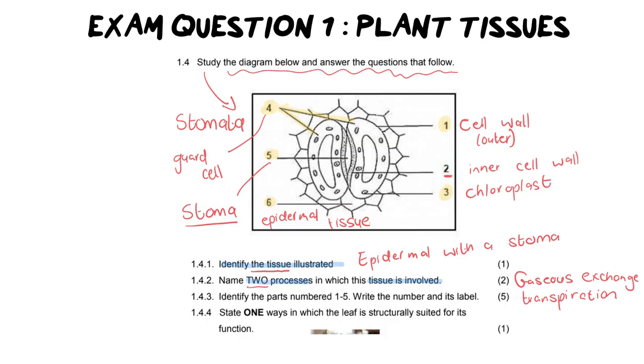On to our next question, number three, identify parts numbered one to five. Write the number and its label. Congrats, we have done that. We didn't need to do it for number six, but that's okay because it helped us identify that this is all part of the epidermal tissue.